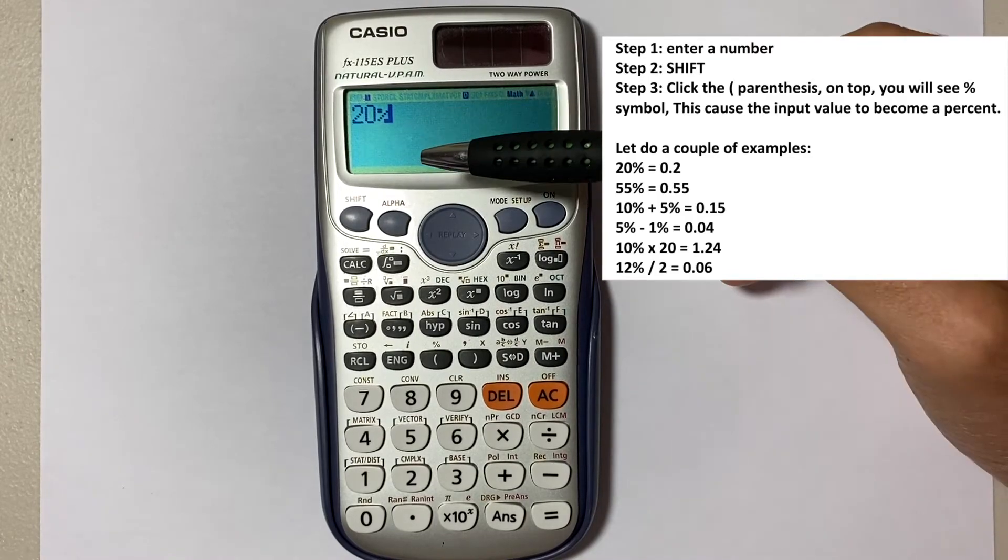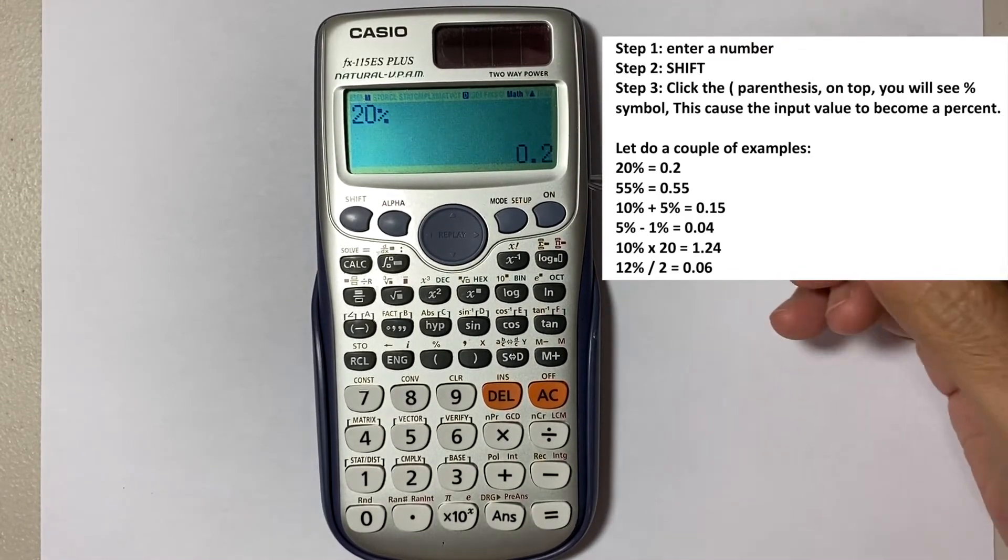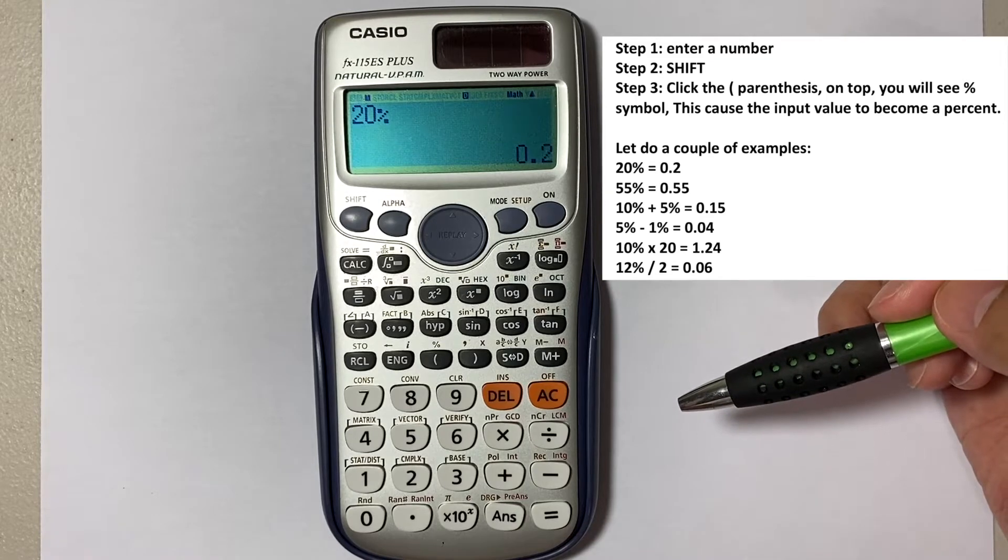On the display you can see that we have 20 percent. When you enter, it will give you point two, the decimal number of the percent.